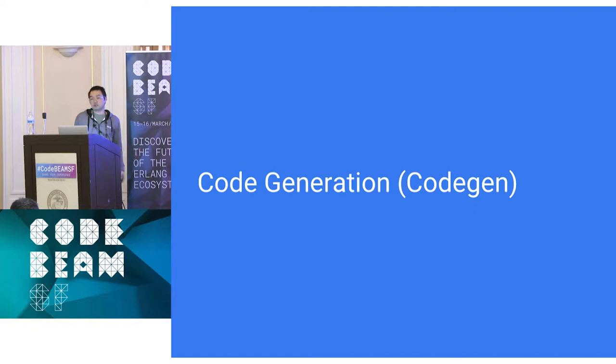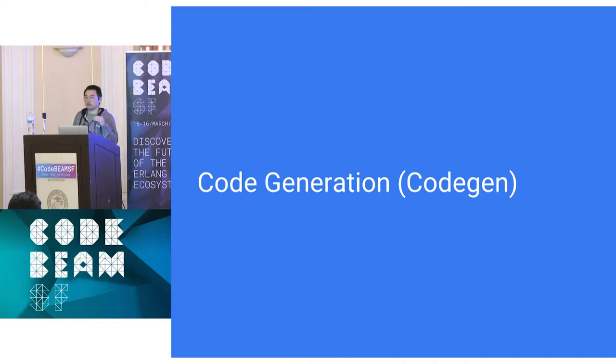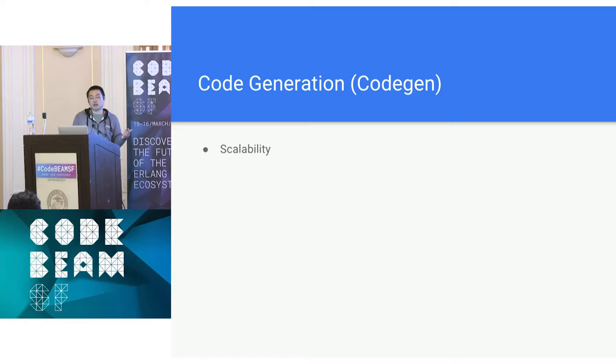Our way of attacking this problem is through code generation — or code gen for short — just code that writes other code. You're probably doing code gen right now without even realizing it. Every time you generate a new mix project using mix new, you're doing code gen. Macros are another type of code gen built right into the language. It's functionality that makes repeatable steps into a trivial amount of work.